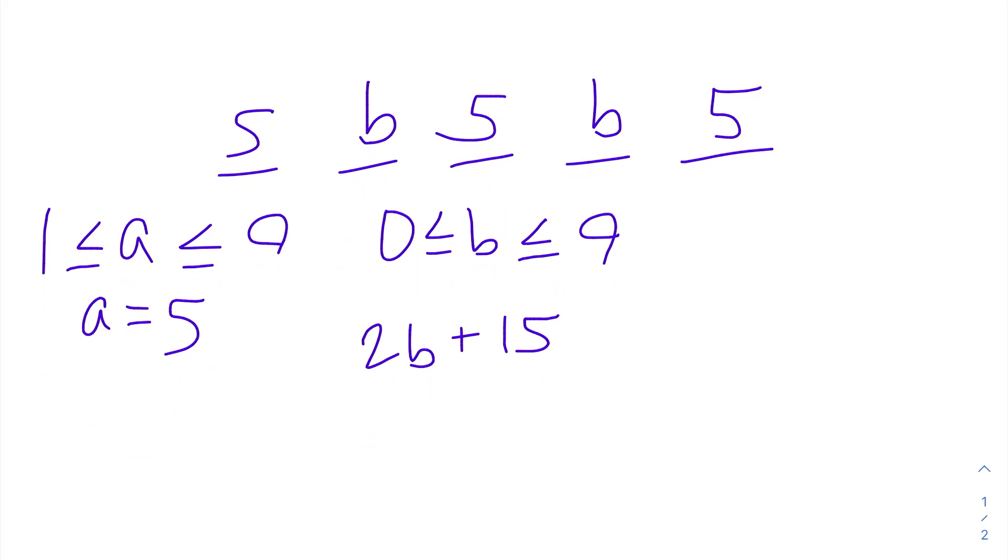We already know that 15 is divisible by 3, so all that we need to know is if 2B is divisible by 3. If so, then this number will be divisible by 3. Now 2B will only be divisible by 3 if B is divisible by 3.